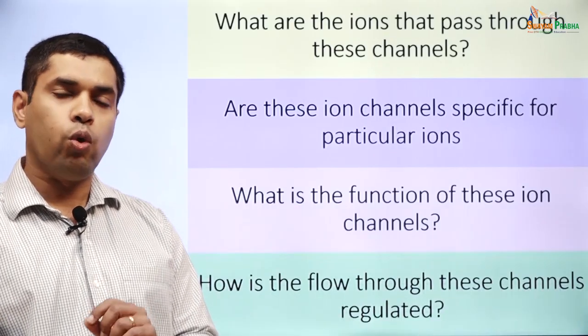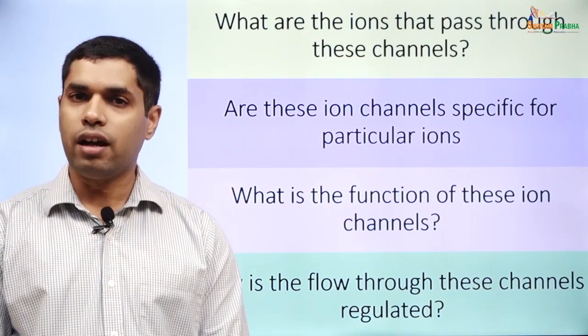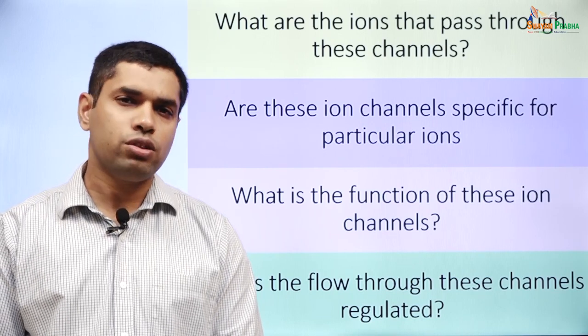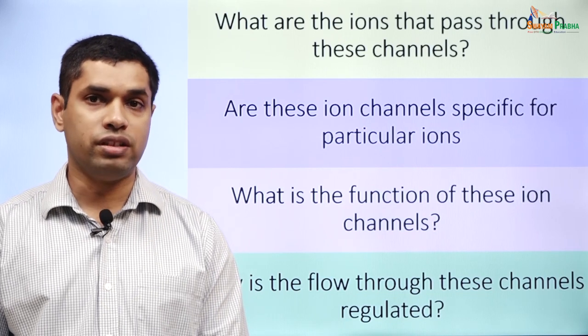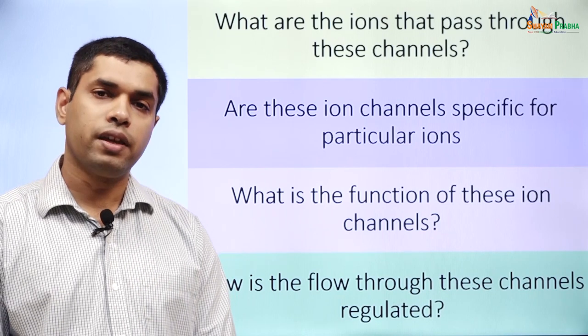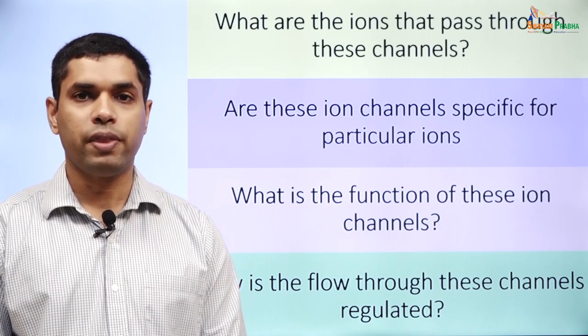We will now begin a study of ion channels in more detail. Before we start, whenever we consider any ion channel there are four basic questions to keep in mind: What is the ion that passes through this ion channel? Is the ion channel specific for that particular ion? What is the function of this ion channel in normal physiology or in a diseased state? And when an ion passes through, how is the flow regulated — or what is the gating?